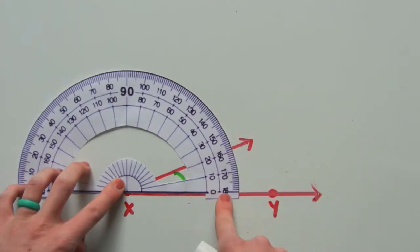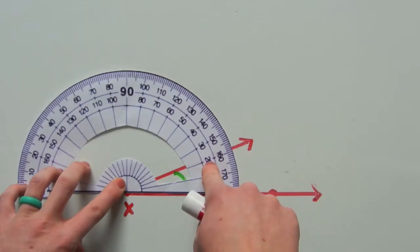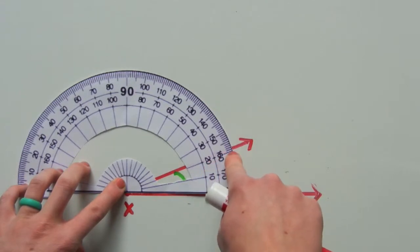So counting up, we're not going to start at 180. We're going to start at zero. So it goes to 10, then 20, and it falls between 20 and 30.